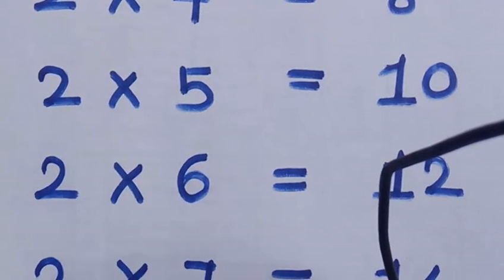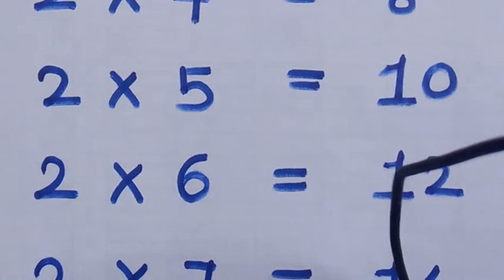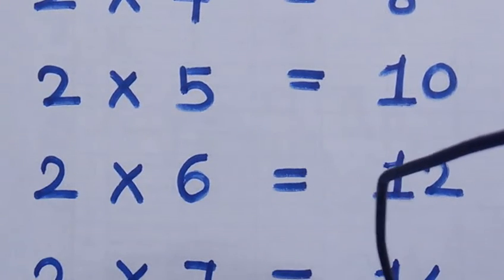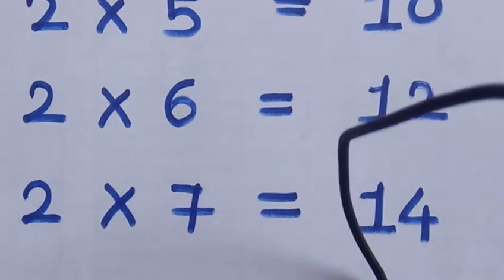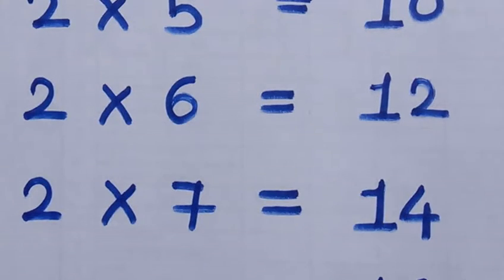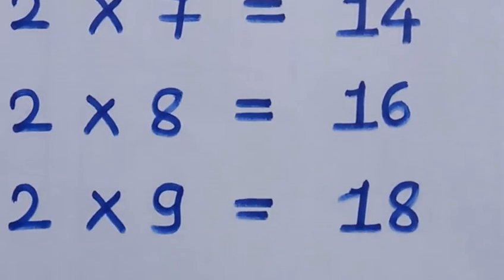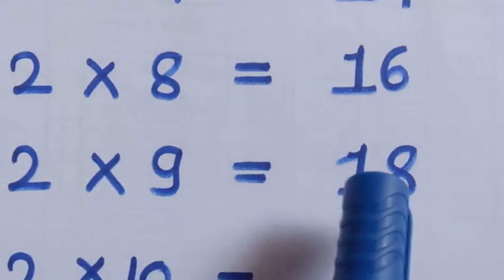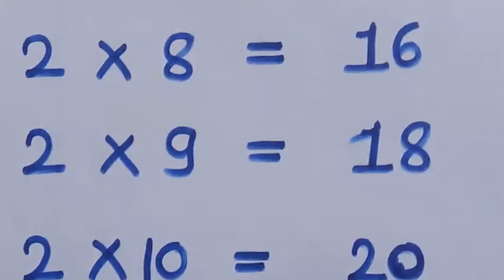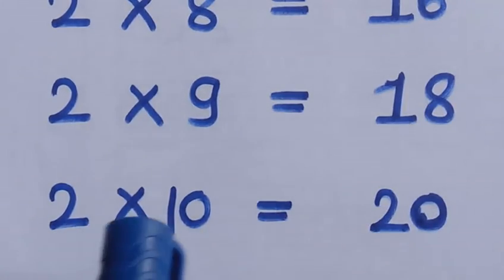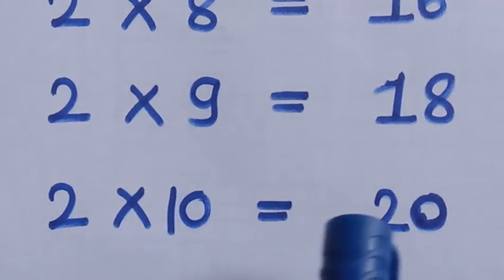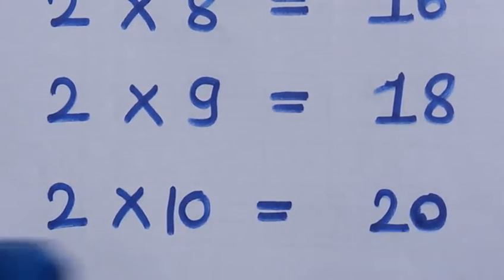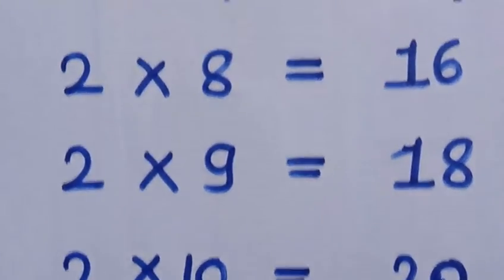Two sevens are fourteen. Two eights are sixteen. Two nines are eighteen. Two tens are twenty.